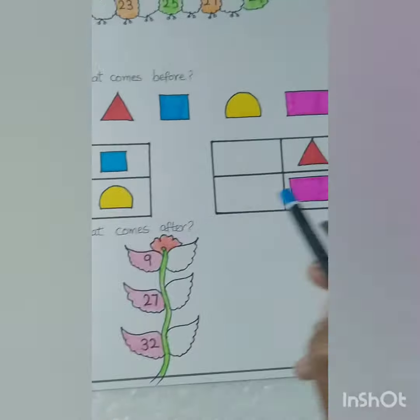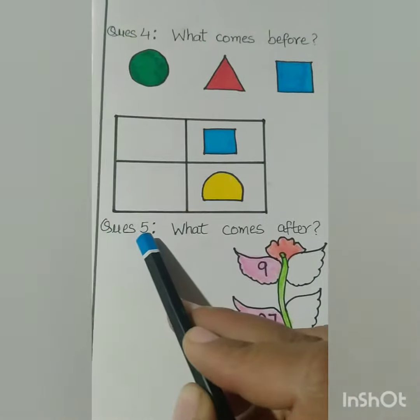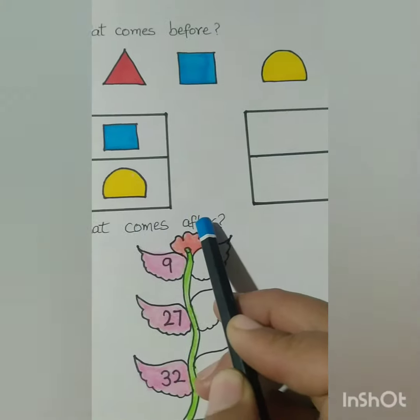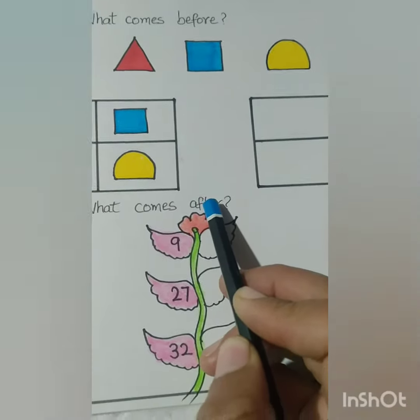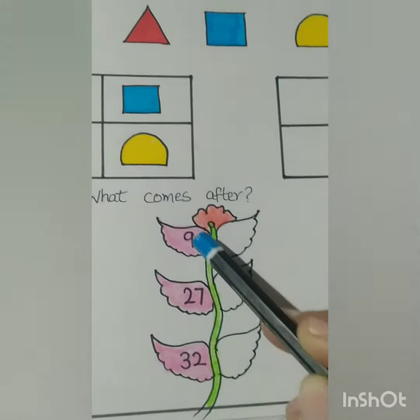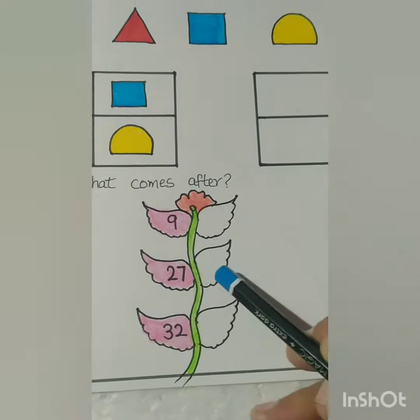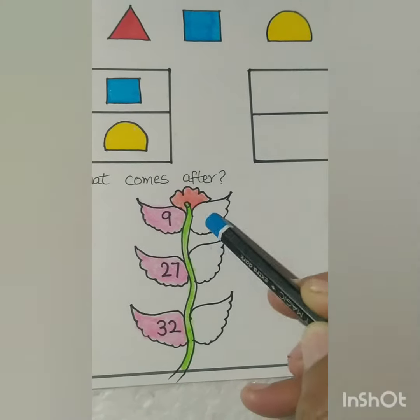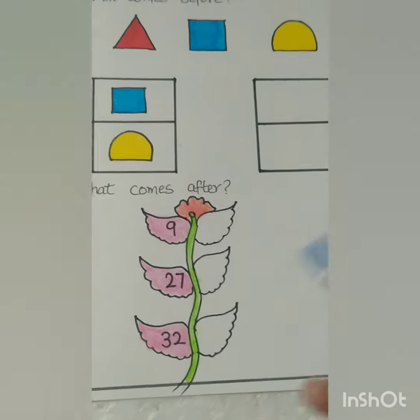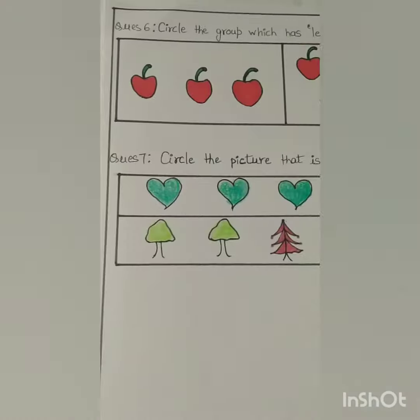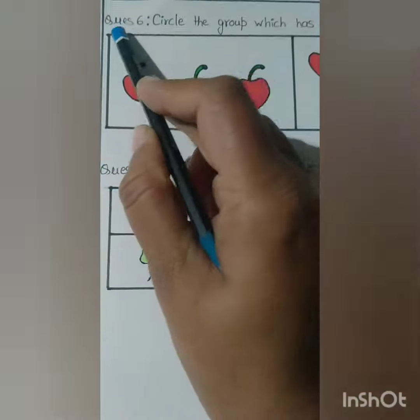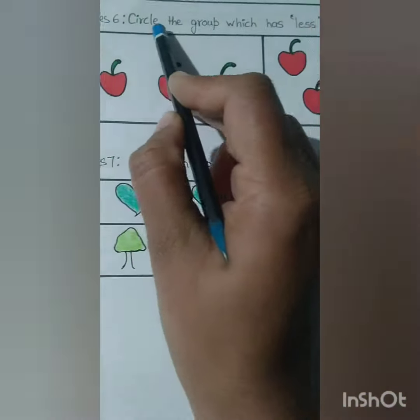Question number four: what comes before. And question number five: what comes after. Children, you will write the number that comes after the given numbers.